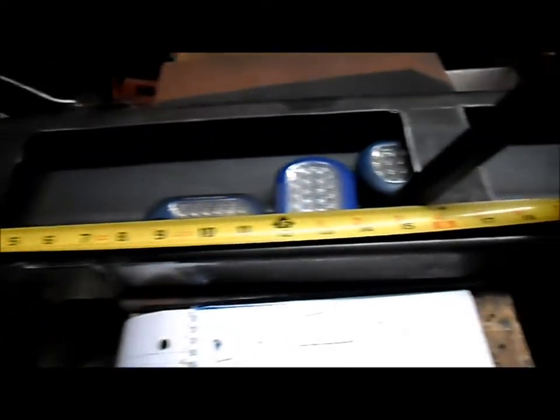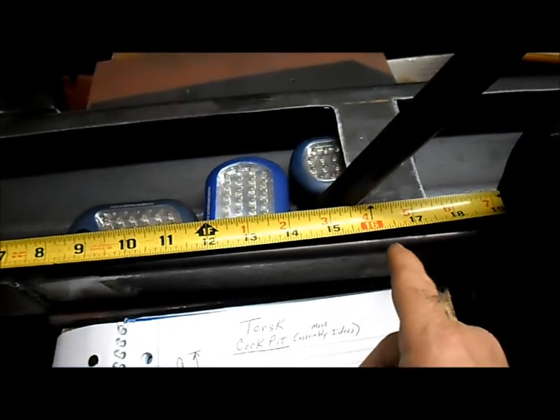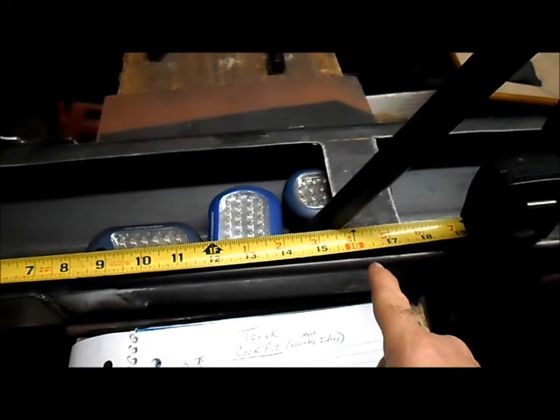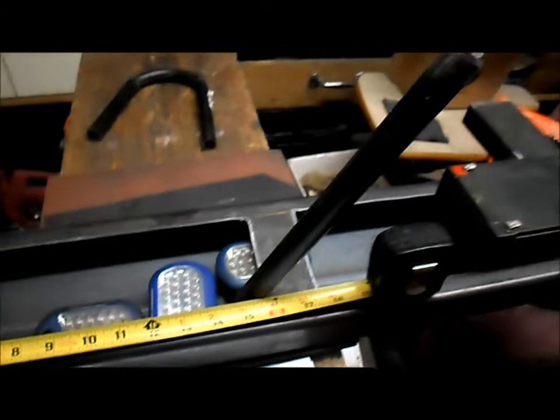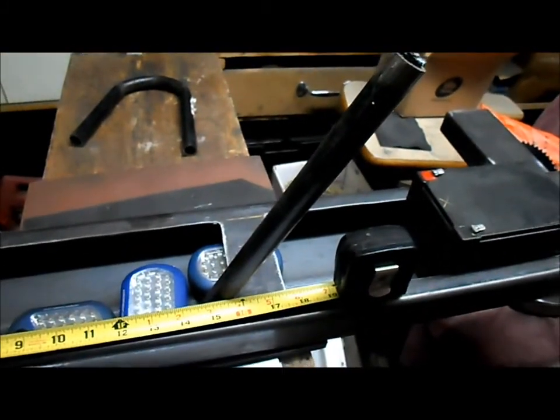And then, 16 inches forward will bring us right up to about where our cross bar is between the battery boxes. And this is where our steering support will come up.